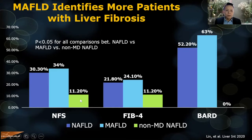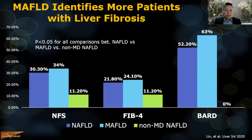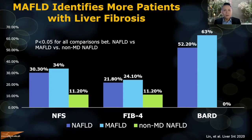I'd like to point out that patients who meet MAFLD but not NAFLD criteria — shown in green — a minority of these patients can already have fibrosis, even though they have not met NAFLD criteria. This has implications for whether you follow these patients up or not.